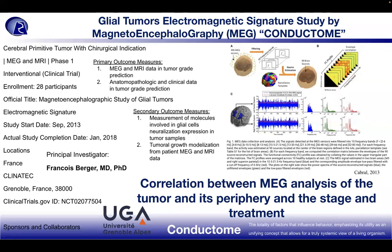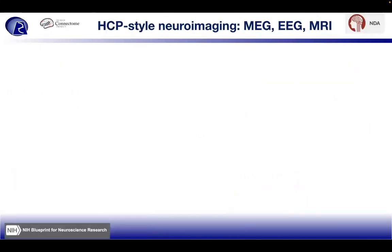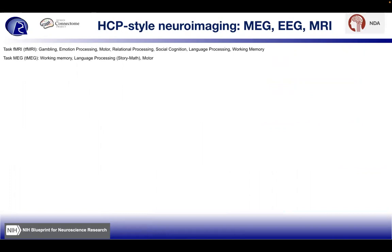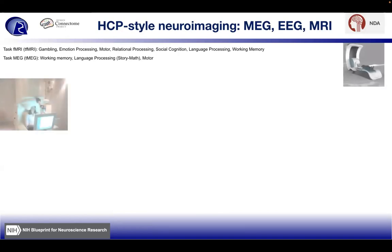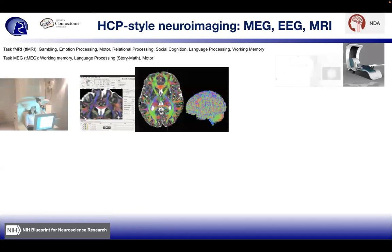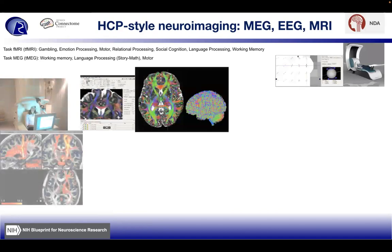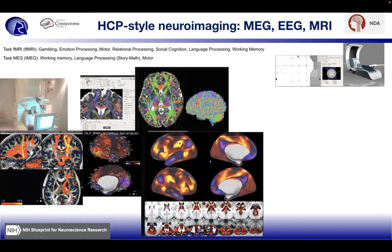The Human Connectome Project (HCP)-style neuroimaging includes MEG, EEG, and MRI. Task fMRI or task MEG measures gambling, emotional processing, motor, relational processing, social cognition, language processing, working memory, and motor tasks as well as story and math processing. The MEG can be done in sitting or supine position, and data output is visualized with the Connectome Workbench — a sophisticated non-invasive technique showing brain pattern activity. A government account in the United States allows access to the Connectome Workbench.